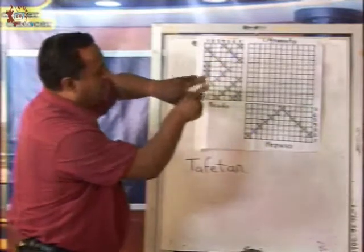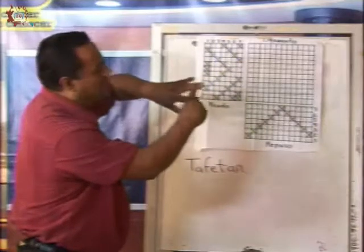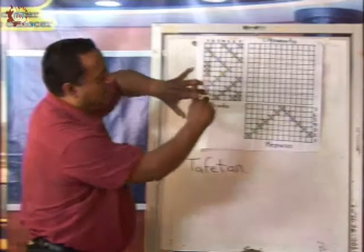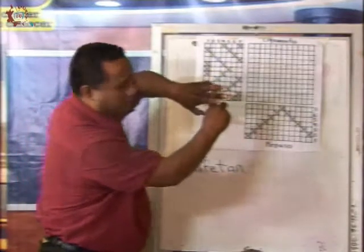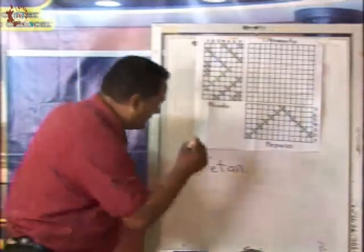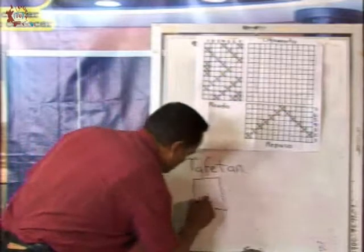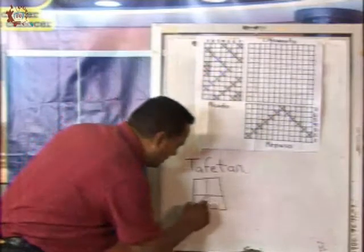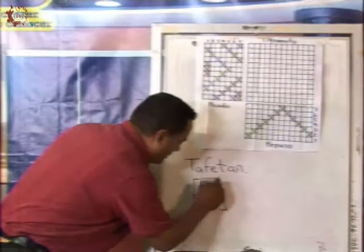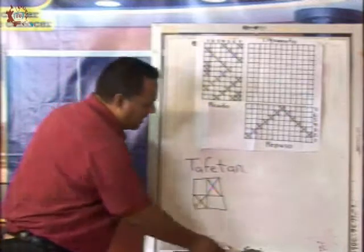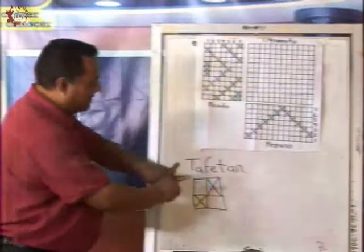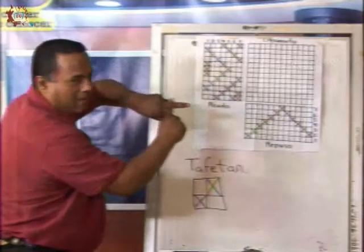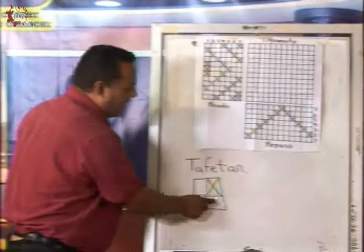Si se alcanza a ver: pasa por encima, abajo y encima. Y el siguiente hilo va a pasar por abajo, encima y por abajo. Gráficamente así se representan los hilos. Esto se representa con una cuadrícula de dos renglones por dos columnas. Las marcadas con X representan que va a pasar por encima, y las que no están marcadas van a pasar por abajo. Entonces, esto se le llama tomado, dejado, dejado, tomado.